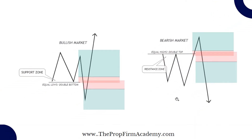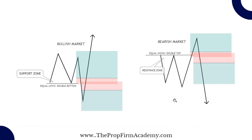The way liquidity works: you find liquidity usually at equal lows and equal highs. In a bullish market, you'll very commonly have scenarios where the market takes out double bottoms or equal lows before it then starts the bullish movement.